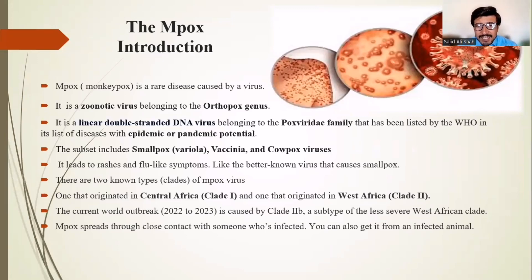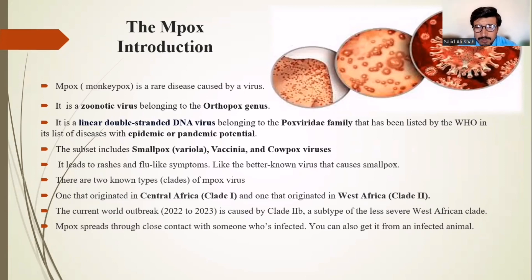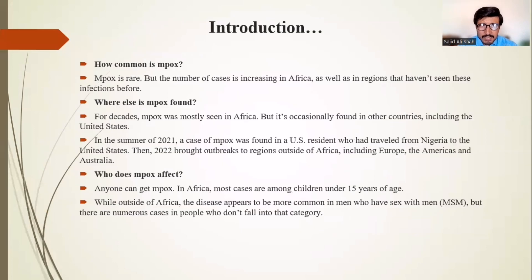The subset includes smallpox, vaccinia, and cowpox viruses. It leads to rashes and flu-like symptoms similar to smallpox. There are two known types or clades: clade one, which originated in Central Africa, and clade two, originating in West Africa. The current 2022–2023 world outbreak is caused by clade 2b, a subtype of the less severe West African clade. Mpox spreads through close contact with an infected person or animal.